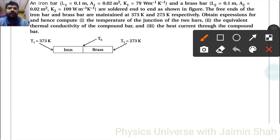Now question is, an iron bar with length, area, and K given, and a brass bar with length, area, and K given, are soldered end to end as shown in figure. The free ends of the iron bar and brass bar are maintained at 373 Kelvin.